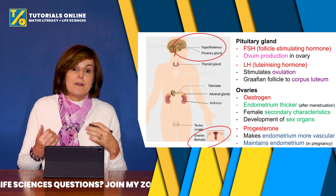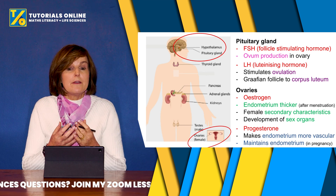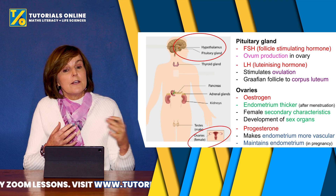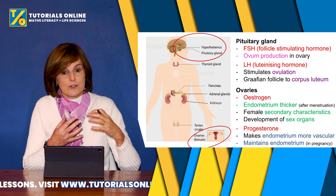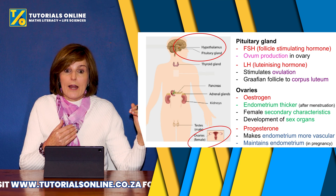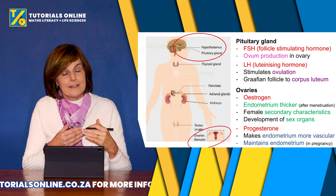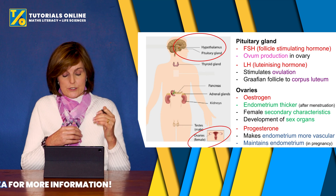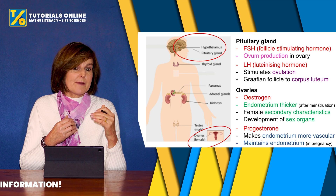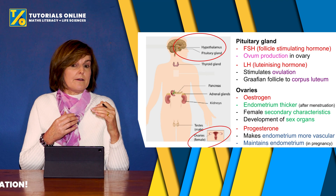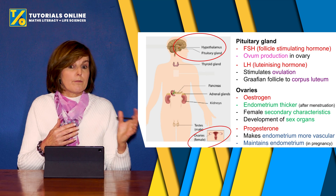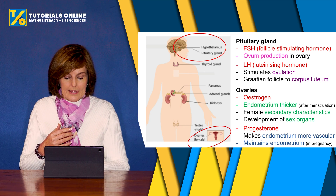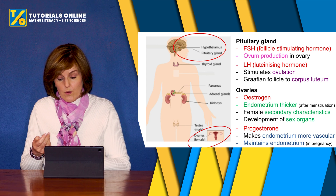Progesterone is produced by the corpus luteum. Progesterone makes the endometrium even more vascular because fertilization may have taken place just after ovulation, and you might need to maintain a pregnancy. Progesterone must stay at a reasonably high level so the pregnancy can be maintained and the endometrium can look after the baby. If there is no pregnancy, the progesterone level drops towards the end of the 28-day cycle and menstruation starts again.